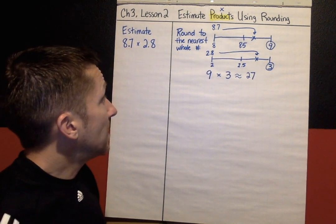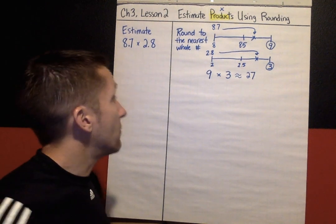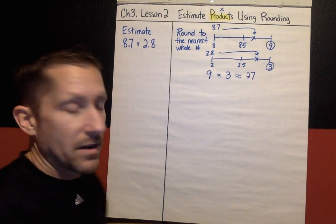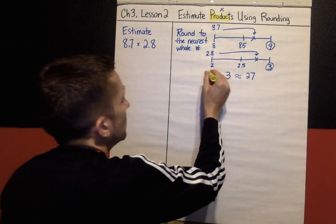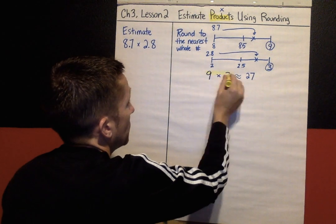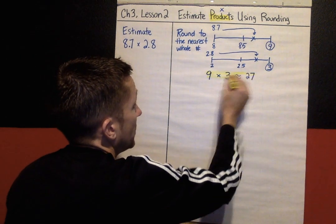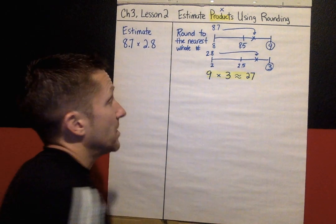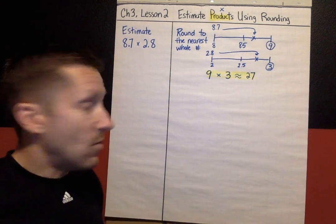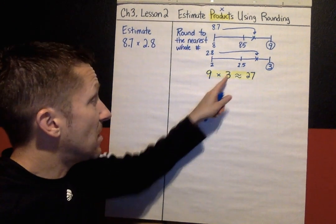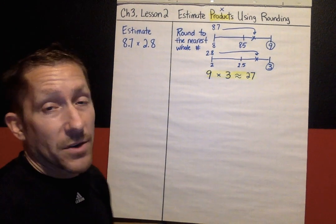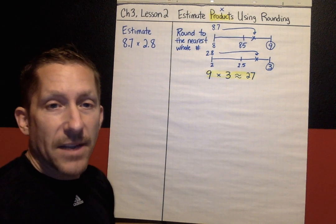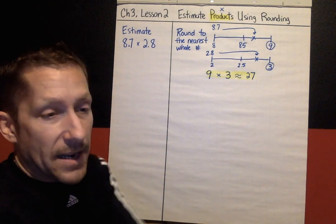For this strategy we were rounding to the nearest whole number. This is what you're going to put — you have to write down what your estimates are when you're solving problems today in your workbook.